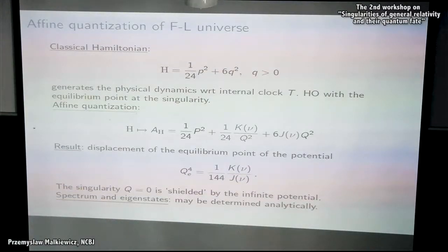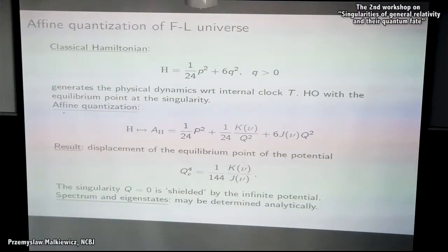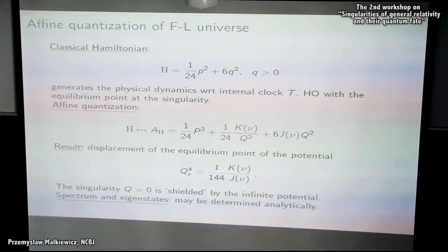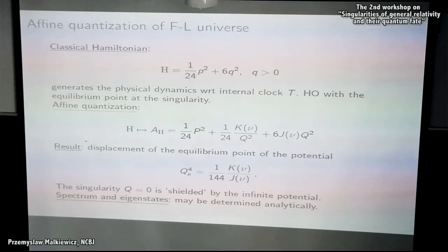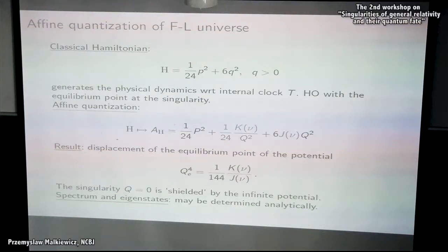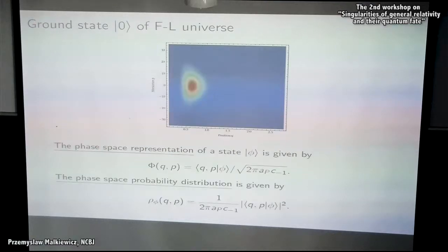Now let's discuss specific models. First I will start with the closed Friedmann-Lemaître universe, then move to the Bianchi 1 model. The classical Hamiltonian has the form of a harmonic oscillator with the equilibrium point at the singularity. The affine integral quantization leads to a quantum Hamiltonian with the repulsive potential and possibly some dressing constant. The singularity is resolved in this simple model; the equilibrium point is shifted away from the singularity. One can determine the spectrum and eigenstates analytically.